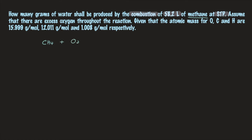In the combustion reaction, CH₄ reacts with oxygen to produce water and carbon dioxide. We need to balance this equation. Currently there are 3 oxygens in the products and only 2 in the reactants. Placing a coefficient of 2 on water gives 4 oxygens, and checking hydrogen gives 2×2 = 4, which matches the 4 hydrogens in CH₄. So the balanced equation is CH₄ + 2O₂ → 2H₂O + CO₂.